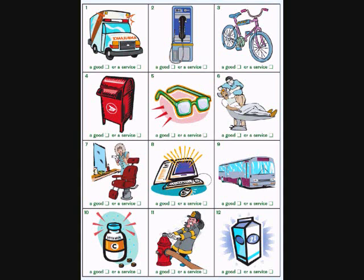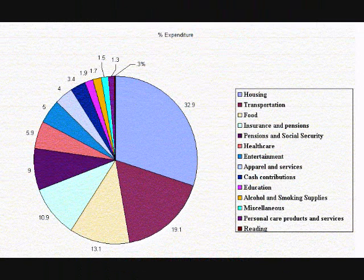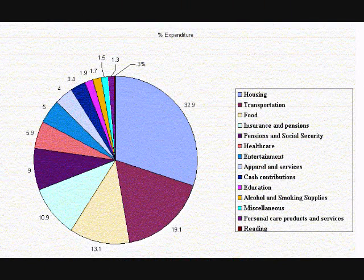Here in the United States, the GDP is recorded by the United States Department of Commerce and it's reported every three months. Looking at a pie chart, you can see the GDP broken down — it consists of about one-third housing and about 20% transportation.